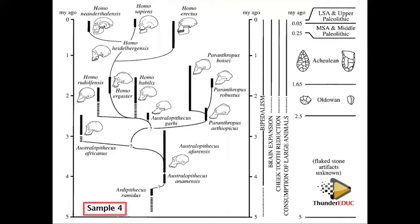This next tree shows what happened to the brain, the tools, and the skulls — it's a combination of everything. Ardipithecus ramidus is here, but there is a missing link before Australopithecus anamensis. The width of the bar shows the period an organism existed.